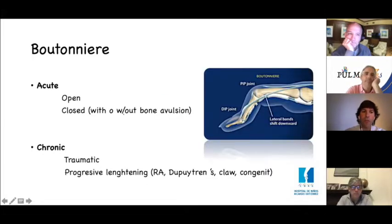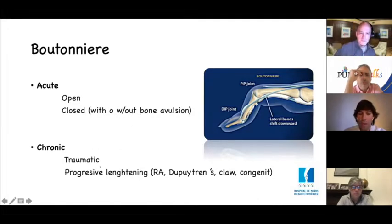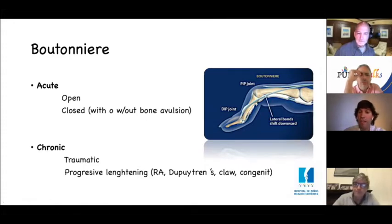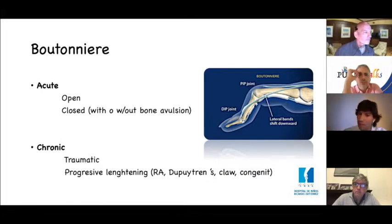We can divide these into acute or chronic injuries. Acute can be open or closed, with or without bony avulsion. Chronic can be traumatic. We can also see lengthening of the central slip with a pseudo-boutonniere deformity in pathologies that maintain the PIP flexed for a long time, such as rheumatoid arthritis, Dupuytren's, congenital conditions, and even claw hand.